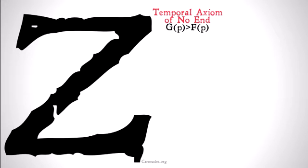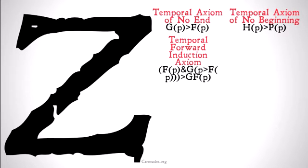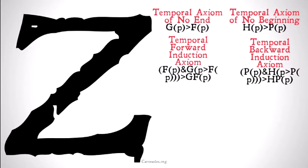ZT is going to have the following axioms. The temporal axiom of no end — if you're curious why this works to make our system not have an end, check out the previous video. The thing to remember with both this and the temporal axiom of no beginning is that at the end of time, GP is vacuously true, and at the beginning of time, HP is vacuously true, for all P. We're also going to have our temporal forward induction axiom and our temporal backward induction axiom. The only difference between these is past versus future — we've just switched all the F's for P's and all the G's for H's between them.